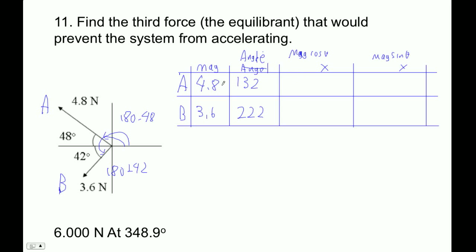So I'm going to go 4.8 cos 132. I'm going to store that in A, just for fun. Negative 3.212, and that's Newtons in the x direction. I'm going to go 4.8 sin 132, store that in B, and this is 3.567.